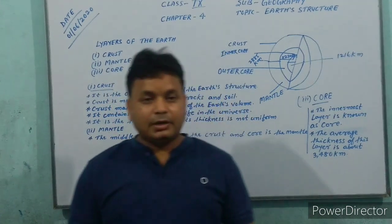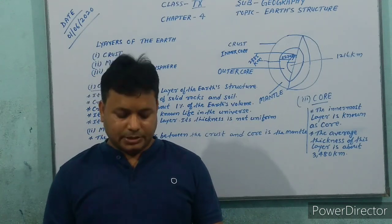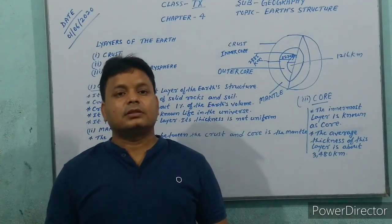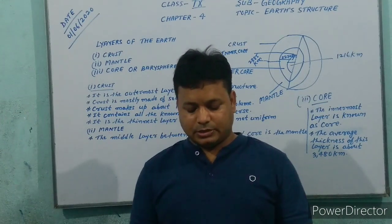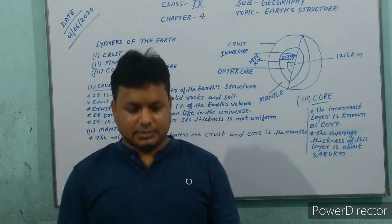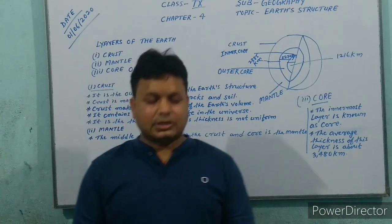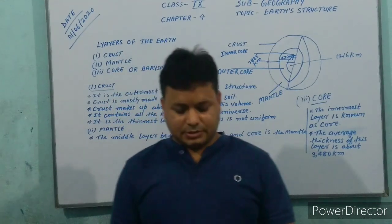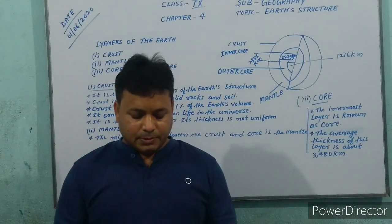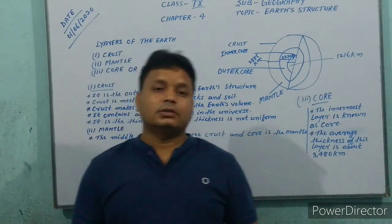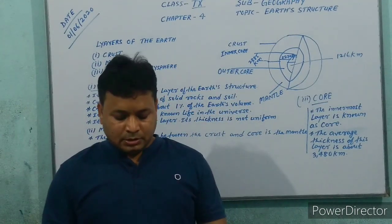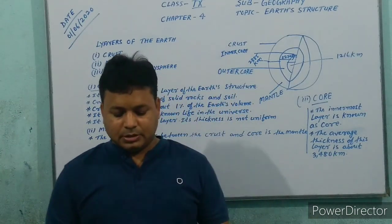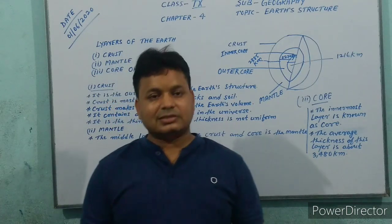Vertical movements lead to the formation of plateaus, plains, and rift valleys. Horizontal movements led to the movement of the continents and oceanic plates and crust. Endogenous forces are of two types: sudden forces and diastrophic forces. Sudden forces suddenly evolve from the core of the Earth, causing devastation on and below the surface. Earthquakes and volcanic eruptions are caused by sudden forces.